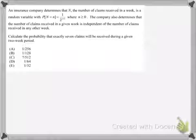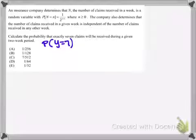What we're being asked is for the probability that exactly seven claims will be received during a given two-week period. Now, this is a little tricky at first because we're given information about a one-week period. But, here's the catch. Since we're trying to figure out the probability that, let's say, that y equals 7 with y being a two-week event, we're going to need to break it down into what we know, which is a one-week event.